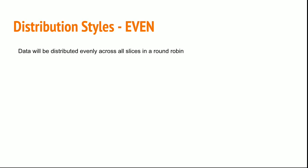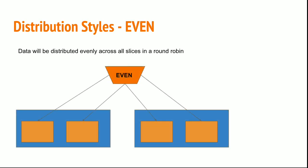Data will be distributed evenly across all slices in the EVEN distribution. The even distribution will happen in a round-robin basis. When I apply this even distribution, data will be evenly distributed across all the slices and it will avoid skewness.